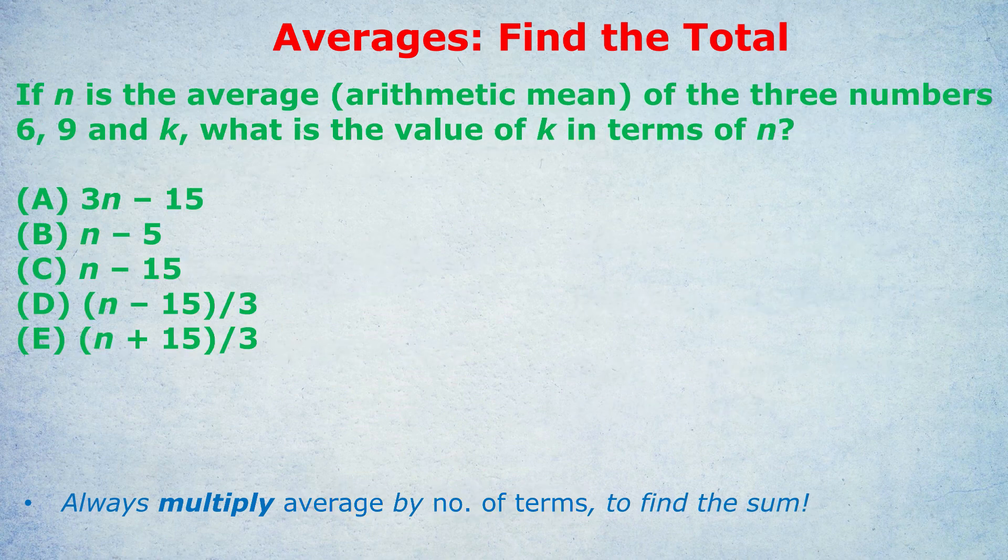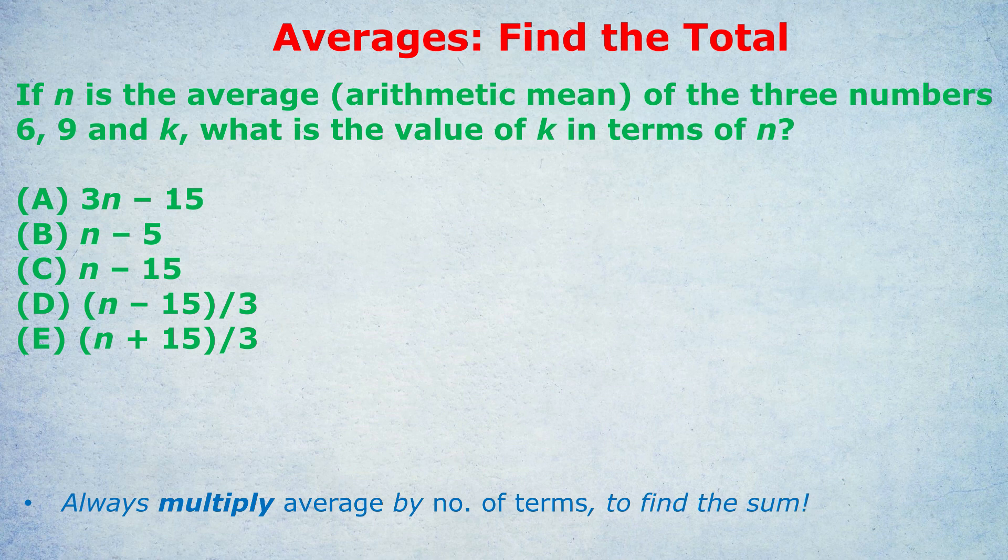If n is the average (arithmetic mean), and they often put those brackets for some reason in the GMAT and the GRE, I guess to clarify that they don't mean median. I've done a separate video on medians. When they say average, they mean mean. If n is the average of the three numbers 6, 9 and k, what is the value of k in terms of n? It starts to get a bit confusing, doesn't it? Unless we follow our method and then it's not.